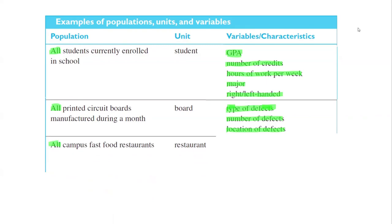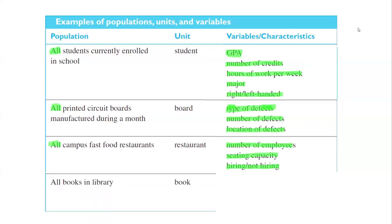Next one: all campus fast food restaurants. The unit can be restaurant, and the question can be number of employees working in the restaurant, seating capacity in that restaurant, or what's the proportion of people they hired last month. Another population: all books in library. The unit is book, and the type of variable questions you can ask are how much does it cost to replace books, what's the average cost, what's the average frequency of checkout, and what proportion of books need repair.